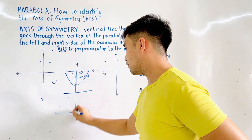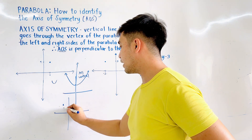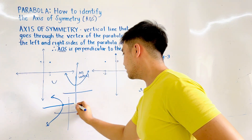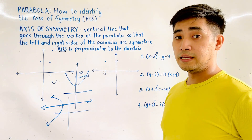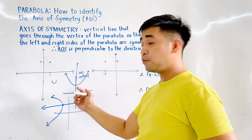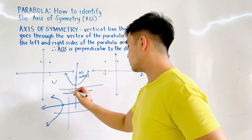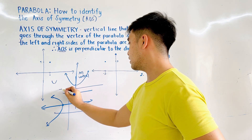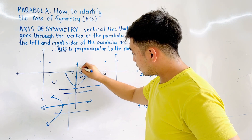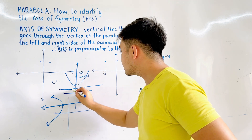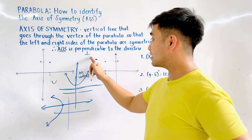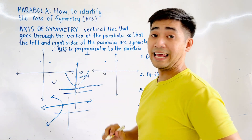But if the parabola is going to the left or to the right — for example, this is the vertex and the parabola is going to the left — therefore, this is the axis of symmetry. And when we say perpendicular to the directrix: since this is the parabola going up, assume that this is the directrix. Therefore, the axis of symmetry is perpendicular to the directrix. This is the sign for perpendicular lines.